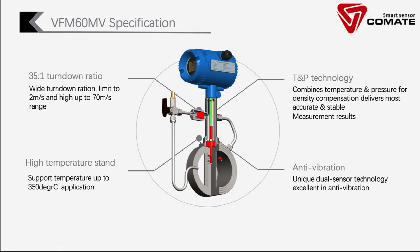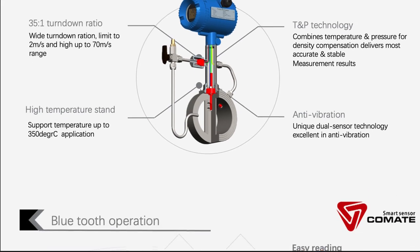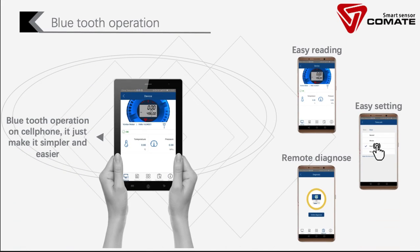For more information, you can click the previous video I posted on 4th April. Besides, Comet offers a Bluetooth function, enabling users to access the flow meter via their mobile phone — for example, to change the unit of flow rate, output settings, and so on. Most importantly, there is a remote diagnosis feature, allowing our engineering team to check and analyze the device online.